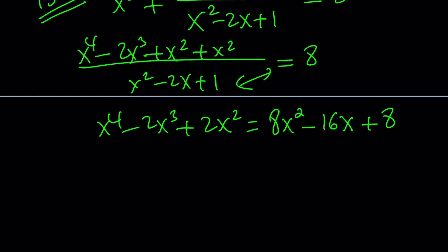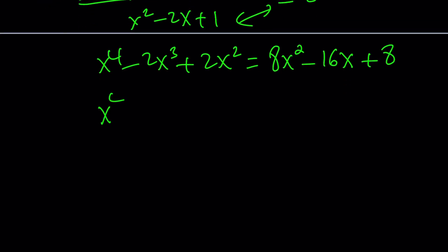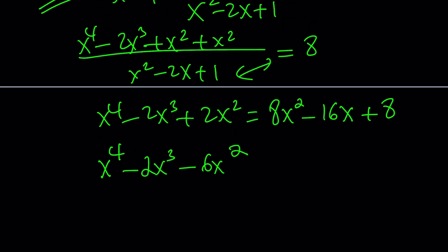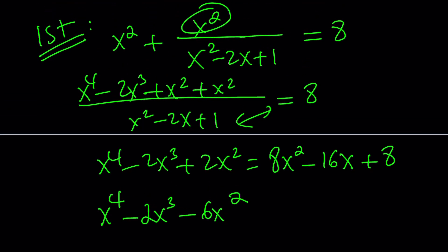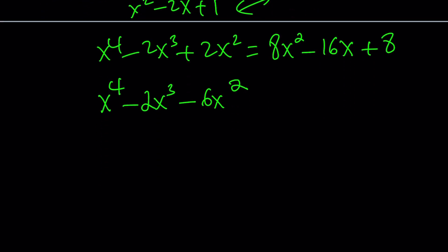Let's put everything on the same side and combine like terms. We get x to the fourth minus 2x cubed plus x squared plus x squared, and then we should have the positive 16x and then minus 8 equals 0.